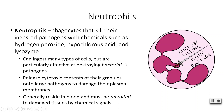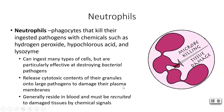Neutrophils are also phagocytes. They will ingest pathogens directly or use chemicals like hydrogen peroxide and hypochlorous acid, and they also have lysozymes — just another chemical used to destroy pathogens. Neutrophils can ingest lots of types of cells but their favorite is bacteria — think of it like a favorite snack. They can also release cytotoxic components held within their granules, which helps damage the plasma membrane of the pathogen, similar to how macrophages work.